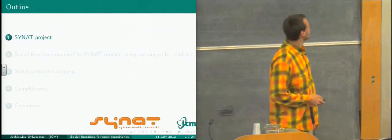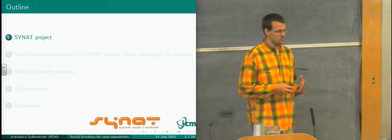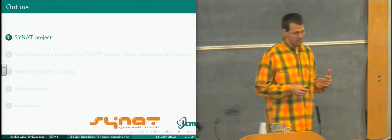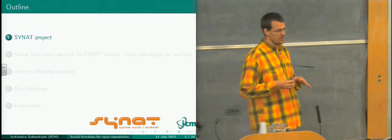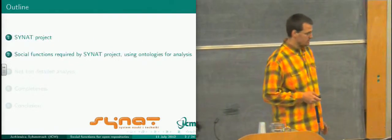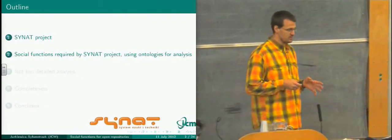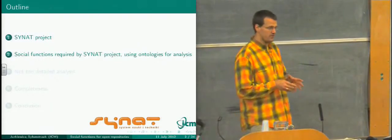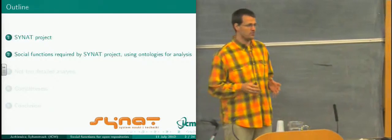First, I will tell a little bit about the Synod project, which was our motivation to do such work. Because at the beginning we were having a digital library, but now with the Synod project we changed a lot. Then I will tell about social functions required by this project, and show how we used ontologies for analysis of this goal. It is the first step of every computational project to do analysis.